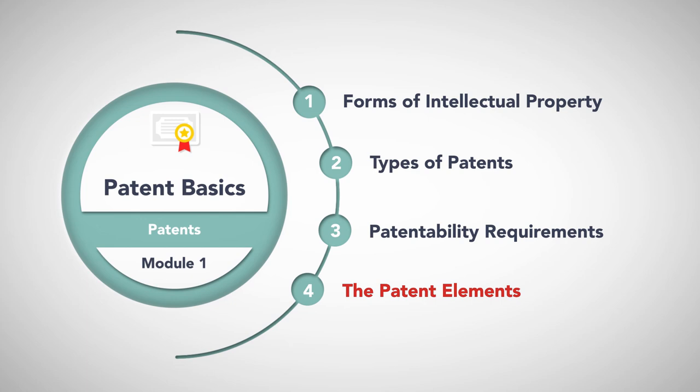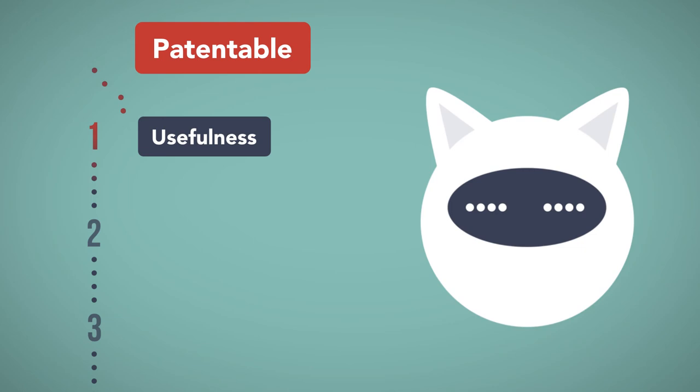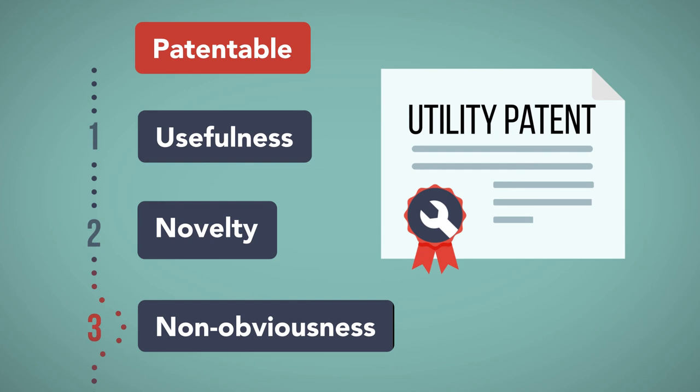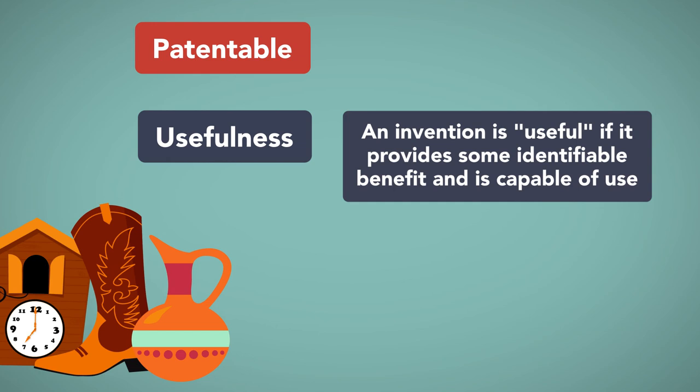To be patentable, three elements are required for any invention: usefulness, for utility and plant patents but not for design patents; novelty; and non-obviousness. Utility patent applications must claim useful inventions to obtain patent protection. This presents a very low bar, and patent claims are rarely rejected on the basis of utility. An invention is useful if it provides some identifiable benefit and is capable of use.